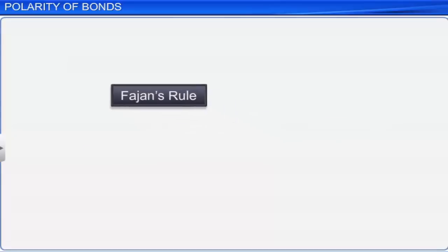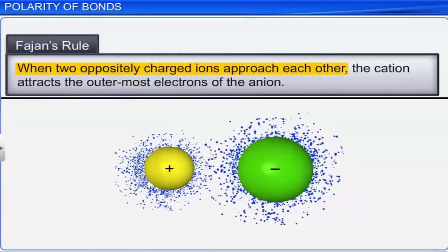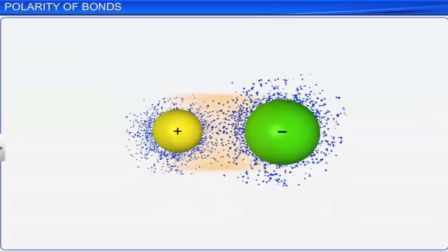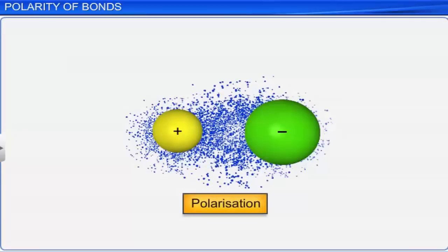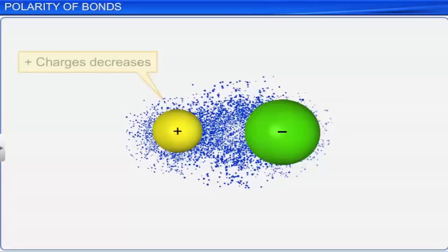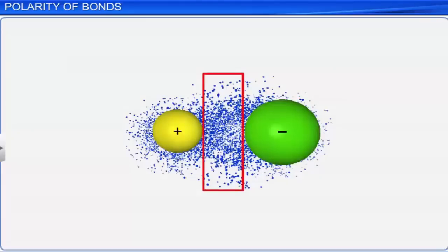According to Fajan's rule, when two oppositely charged ions approach each other, the cation attracts the outermost electrons of the anion. Due to this, the electron cloud of the anion gets distorted — this is called polarization. The tendency of the anion to get polarized by the cation is called polarizability. As a result of polarization and polarizability, the positive and negative charges decrease on the cation and anion, meaning the electronic charge becomes more concentrated between the two bonded atoms, responsible for the development of covalent character in ionic compounds.